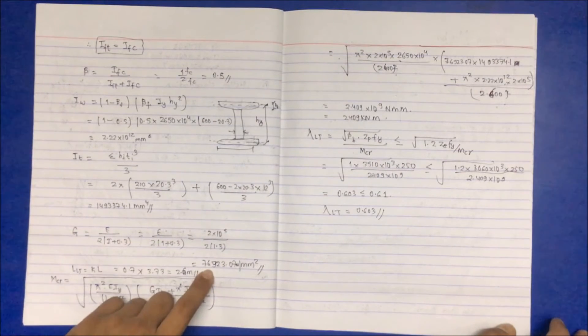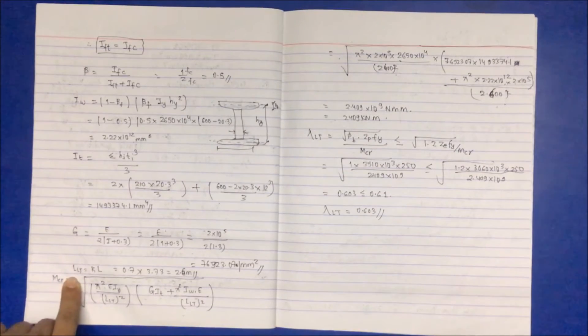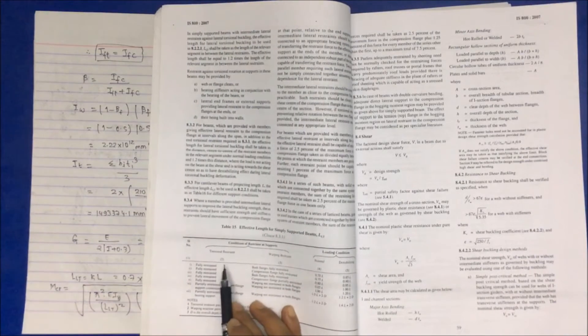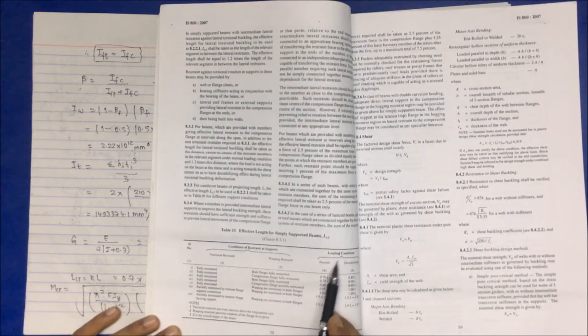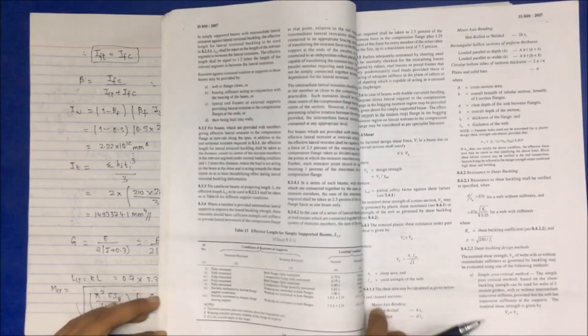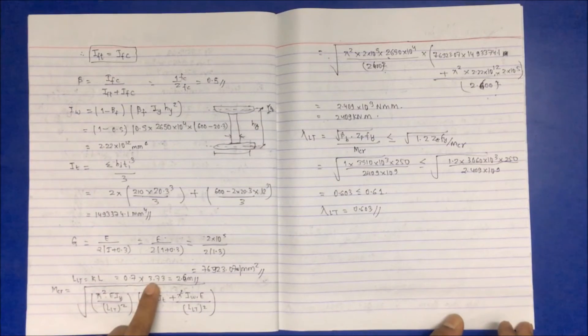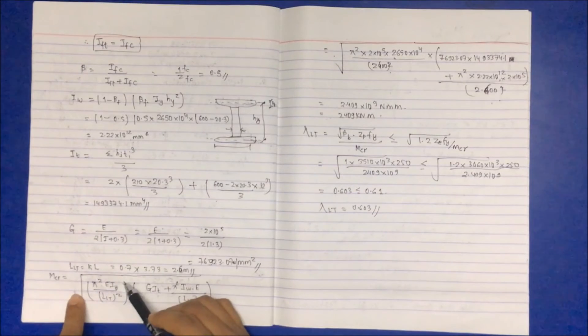For L_LT, refer to Table 15 at page 58. Both torsional restraint and warping restraint are fully restrained on both flanges. For normal loading conditions this gives K = 0.7, so L_LT = 0.7 × 3.73 = 2.61 meters. Substituting all values into the M_CR equation gives the value of M_CR.